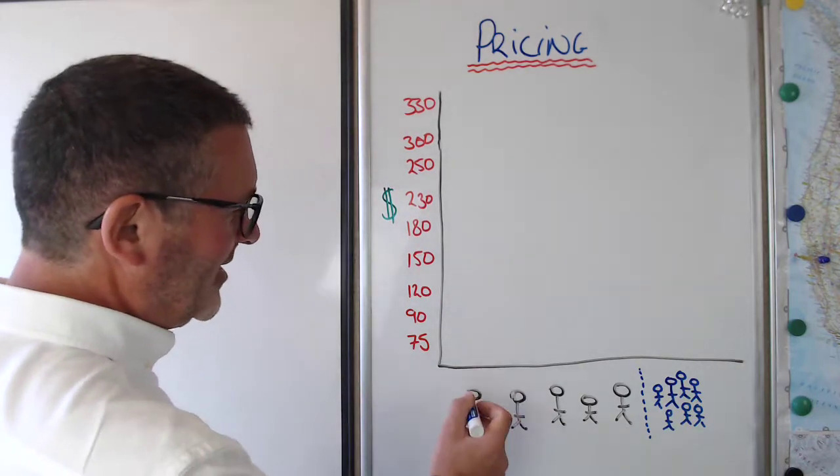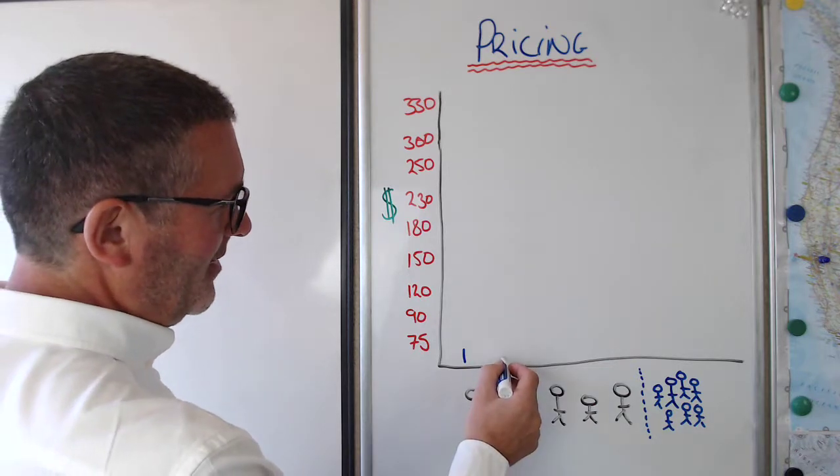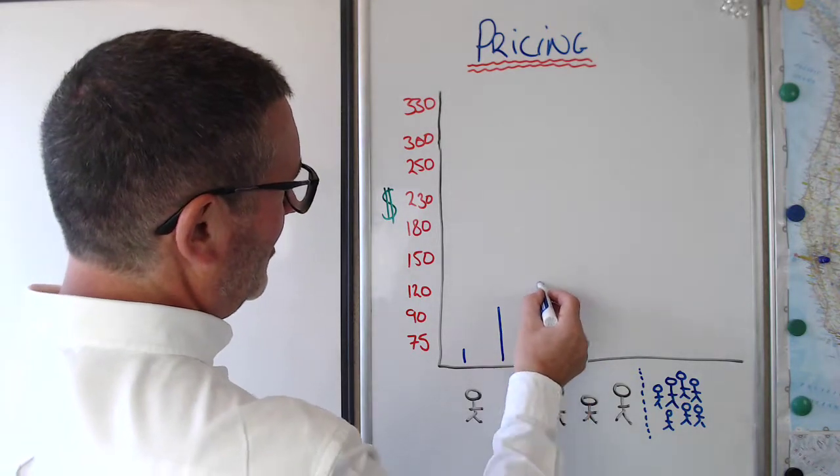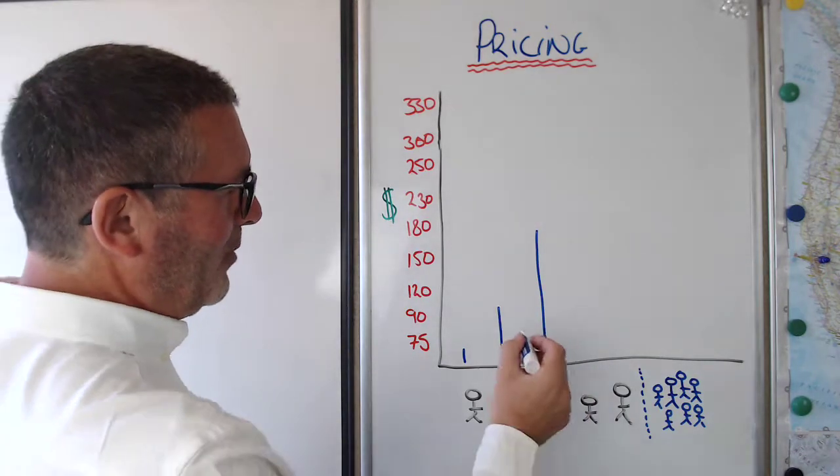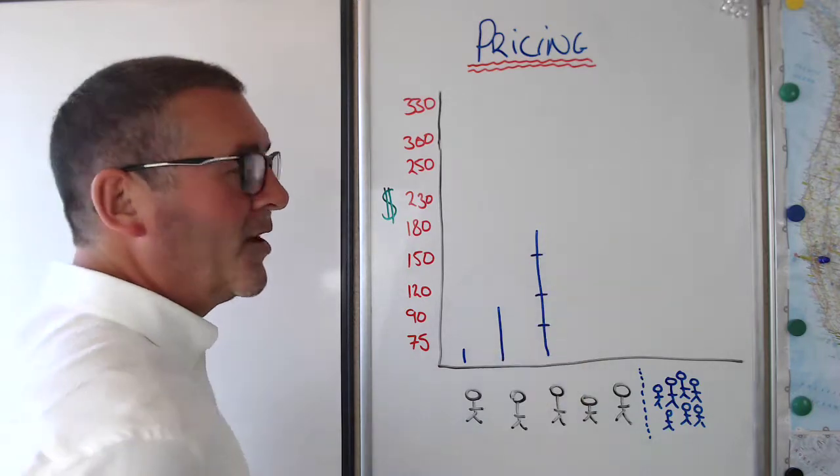So this guy here thinks he sets his price at $75. This guy here thinks he's maybe $120. This guy here thinks he may be $180. And this guy here probably started off a bit low and he put his price up, put his price up.